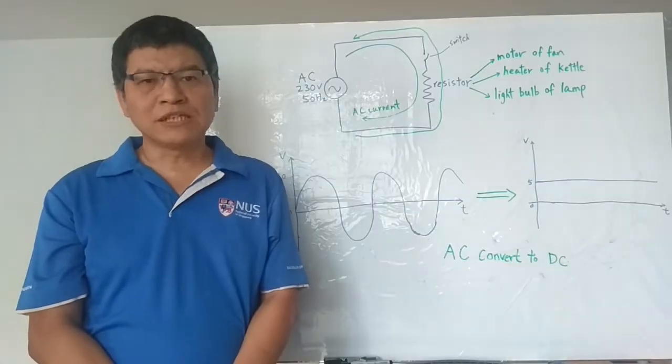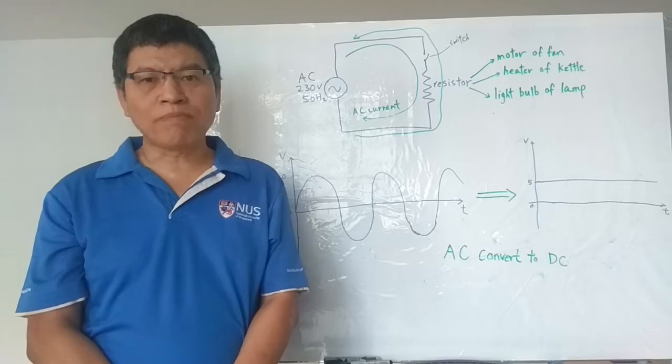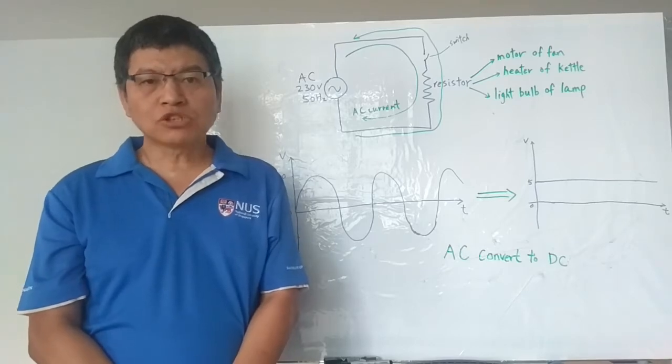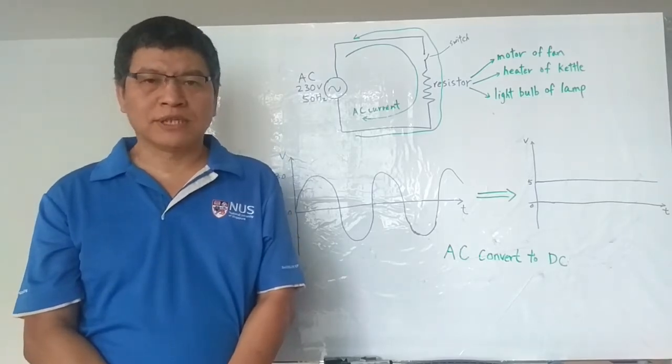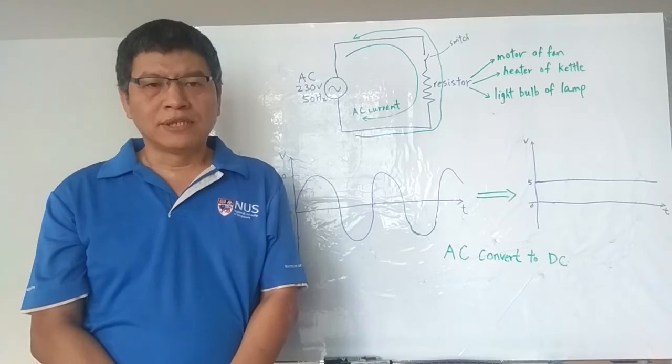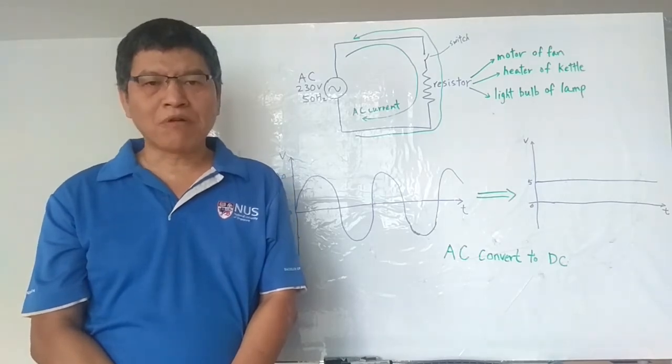You may ask if these electronic appliances are operated in DC, why don't straight away use DC power source? The reason is these appliances consume high power.